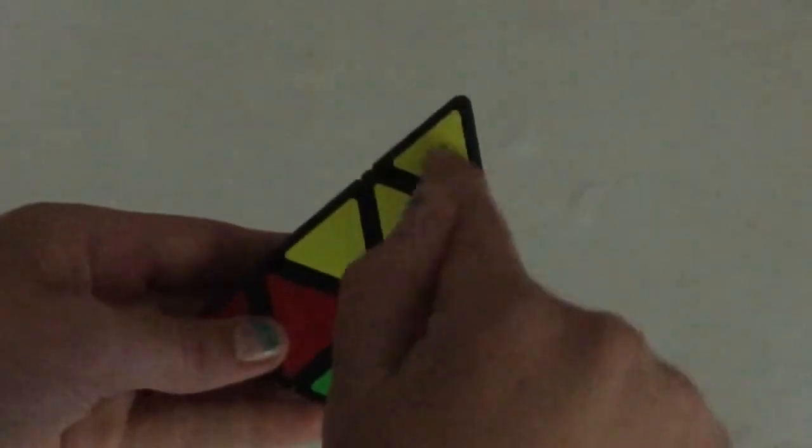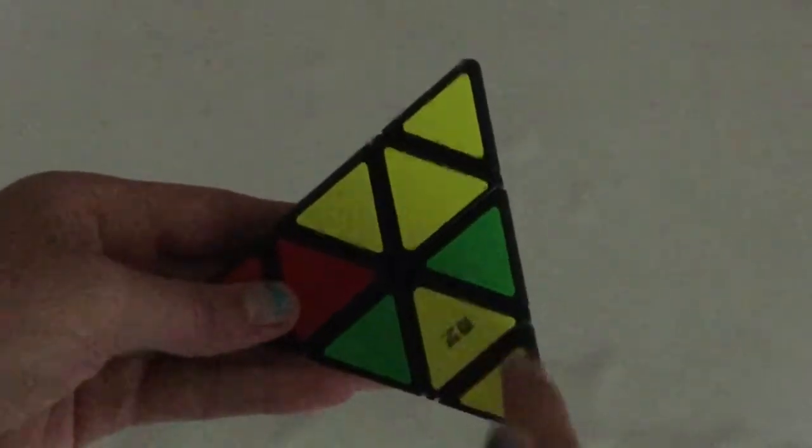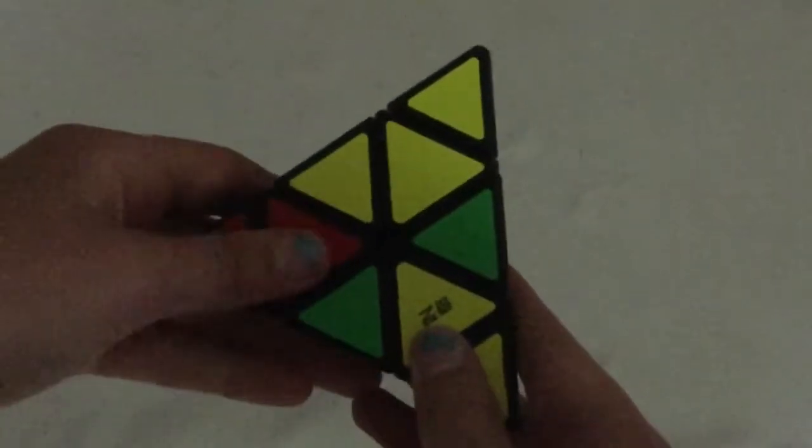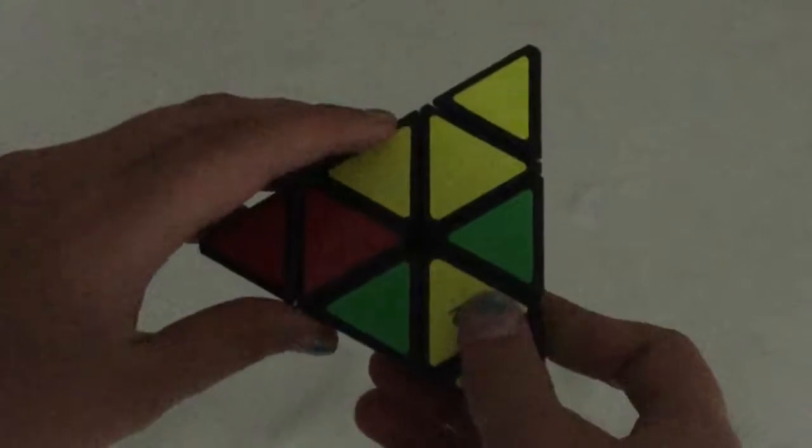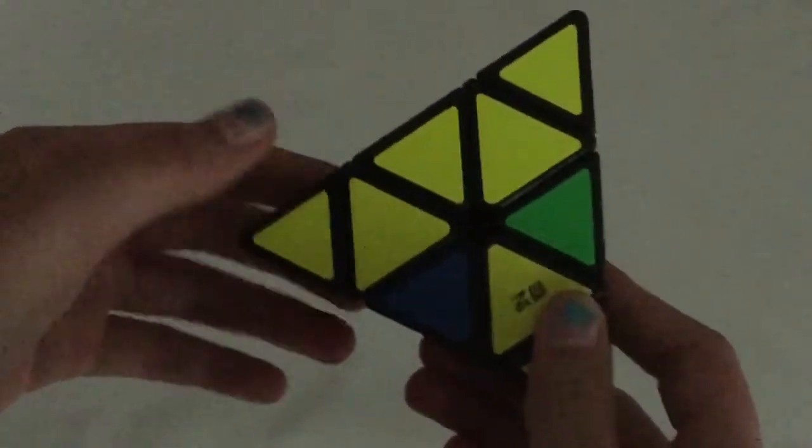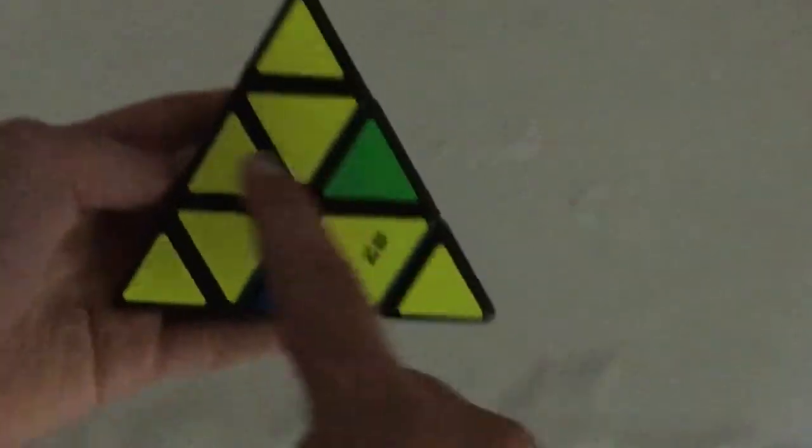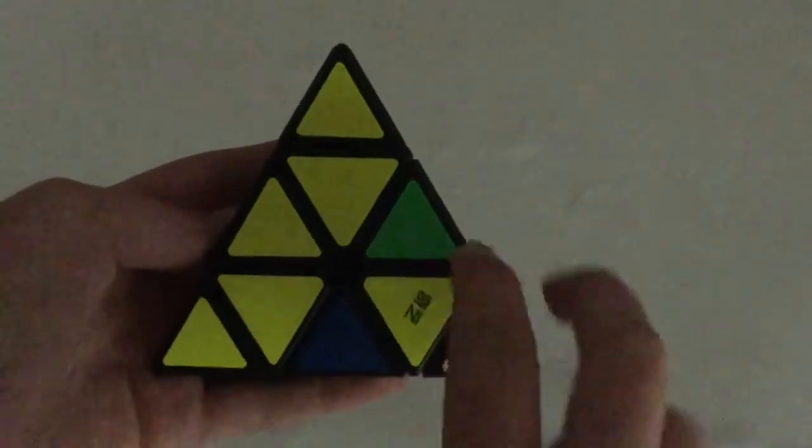Now my next goal is to basically get this yellow all the way around here. So like yellow, yellow. This is red. So I'm going to have to find my yellow, and ah, it is here. So I'm just going to bring it around until it's here. So you kind of see what I did now?